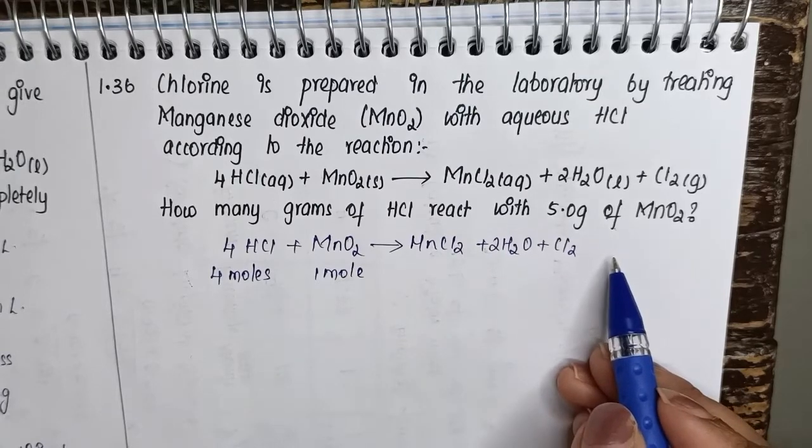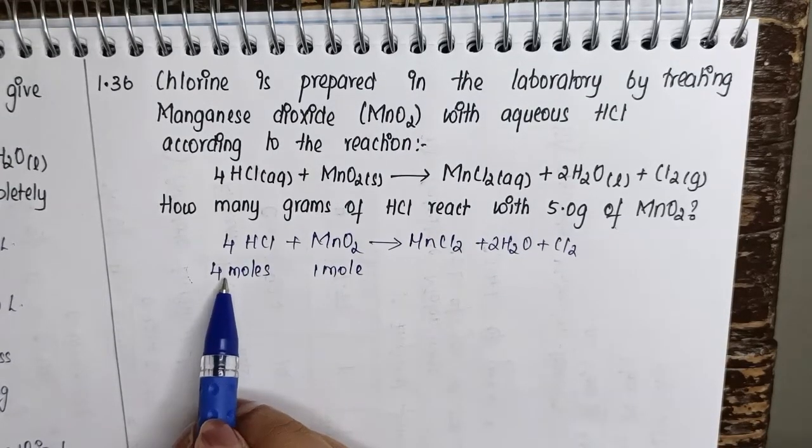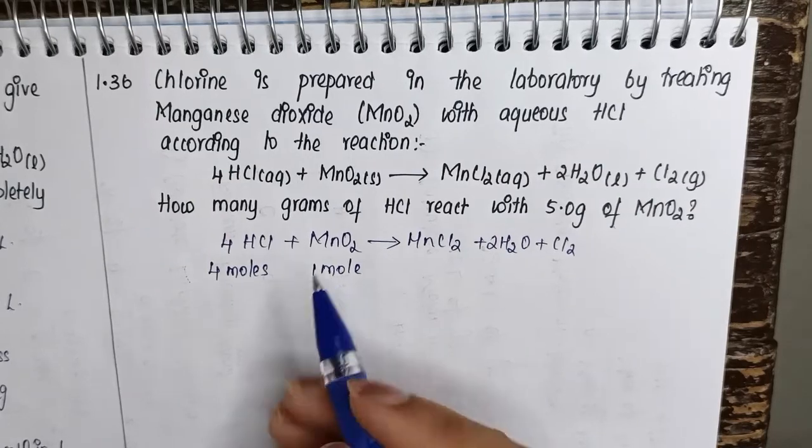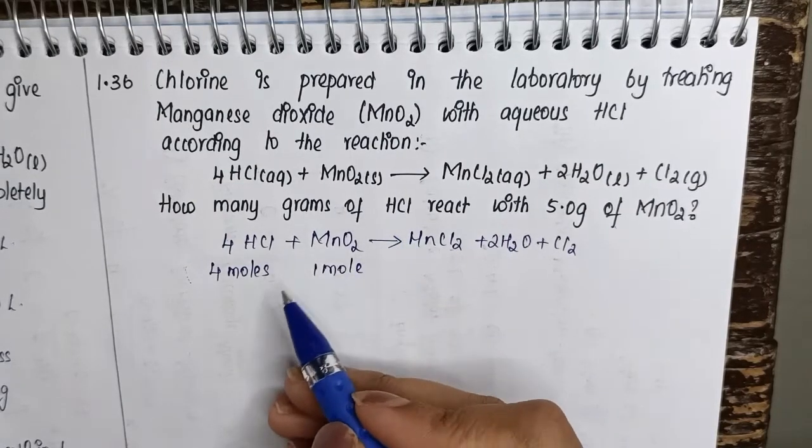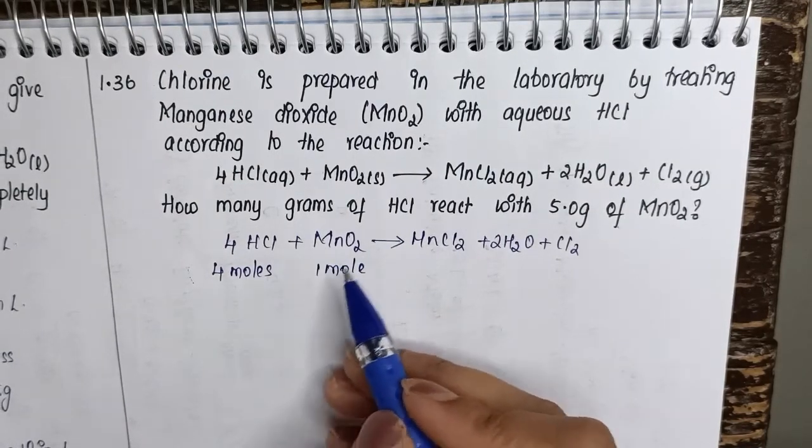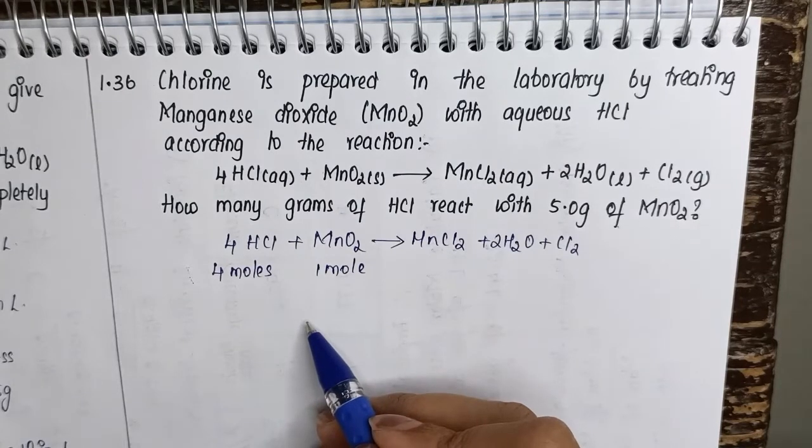Let us not move to the product side. So here we have 4 moles of HCl and 1 mole of MnO2. Let us check what is there in terms of these values in terms of their grams.